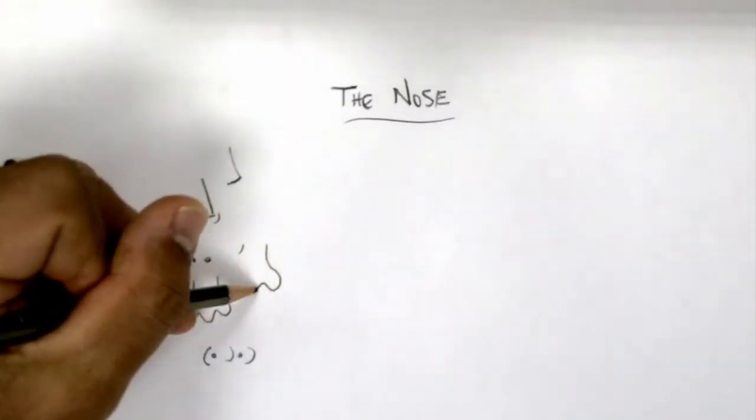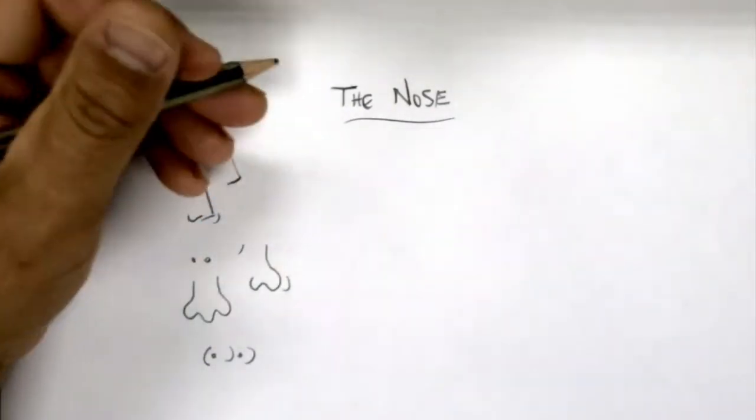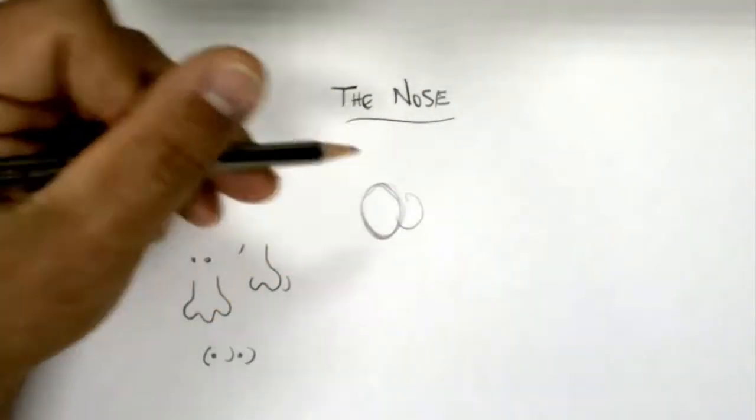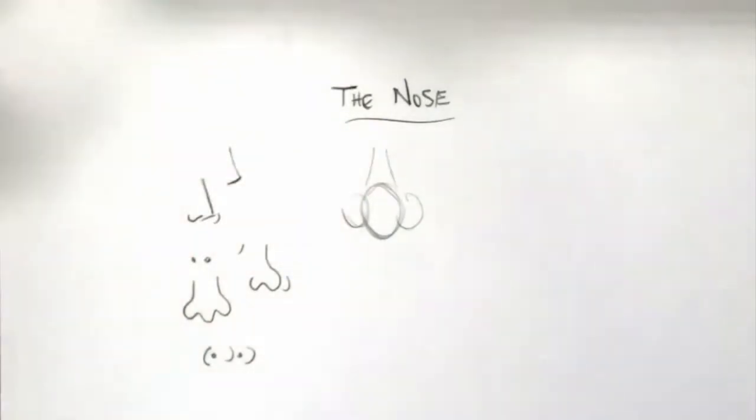You've probably drawn them like this a few times, but in actuality, the more realistic you want to get with the nose, you want to think about three ovals or three circles that join together.